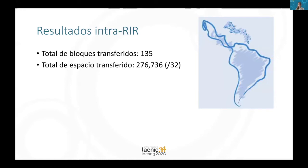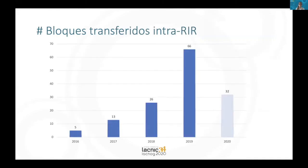Let us look at some of the results of intra-IRR transfers. Until now, 135 blocks were transferred within the Latin American and Caribbean region — a space of 276,736 IPv4 addresses. If we look at the number of blocks transferred within the region, we see that this has increased, mainly the number of blocks transferred from one year to the next.